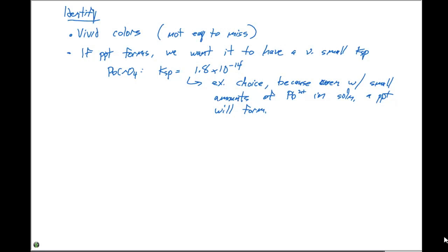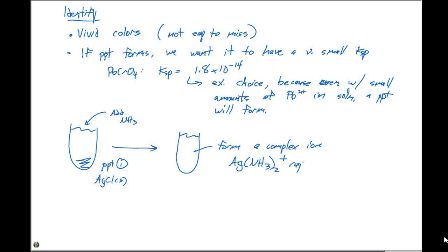Another thing that we need to make sure that we confirm is that that other white solid that we had is indeed silver chloride. So if we had our precipitate number one which we're presuming to be silver chloride, what we want to do is we want to add concentrated NH3 or ammonia. And what we're going to see, that upon addition right here, we're going to form a complex ion that is Ag(NH3)2 with a plus one charge.